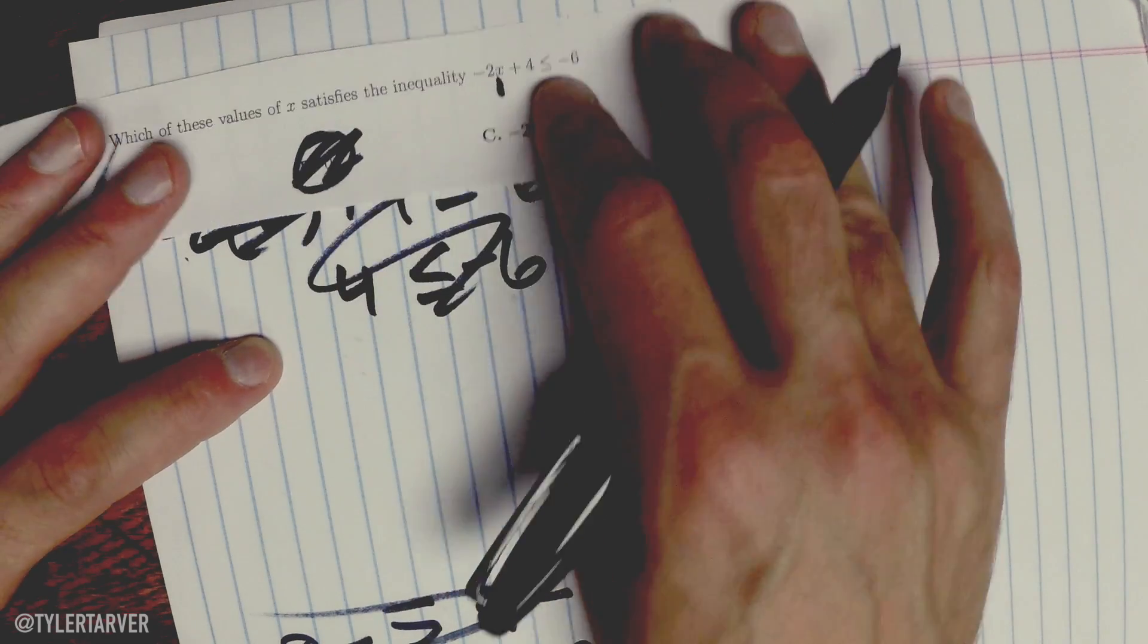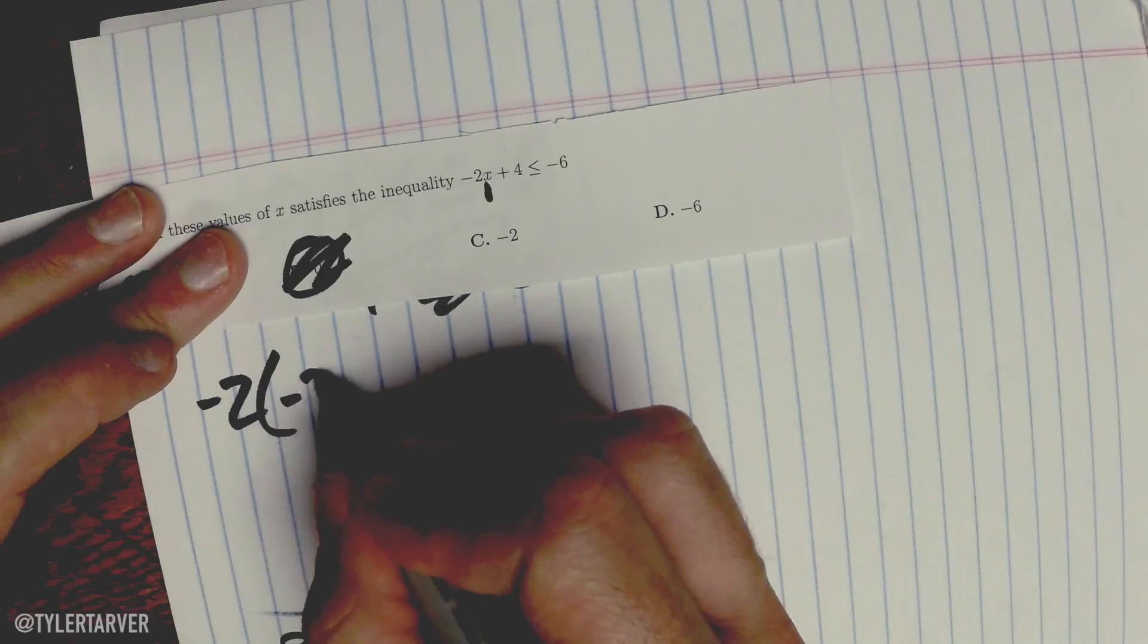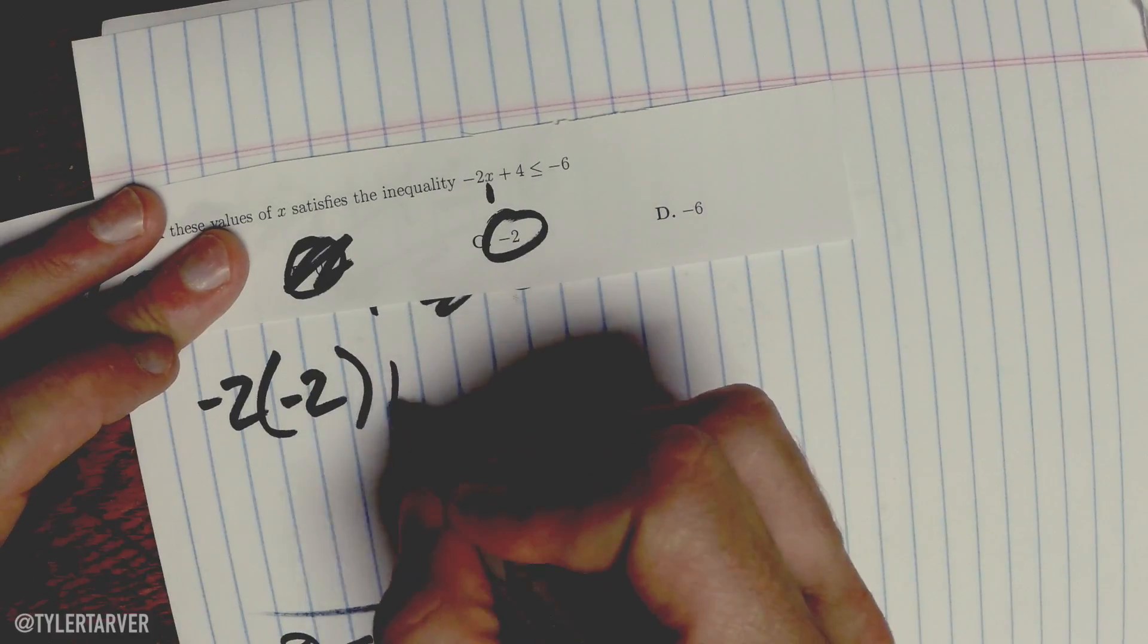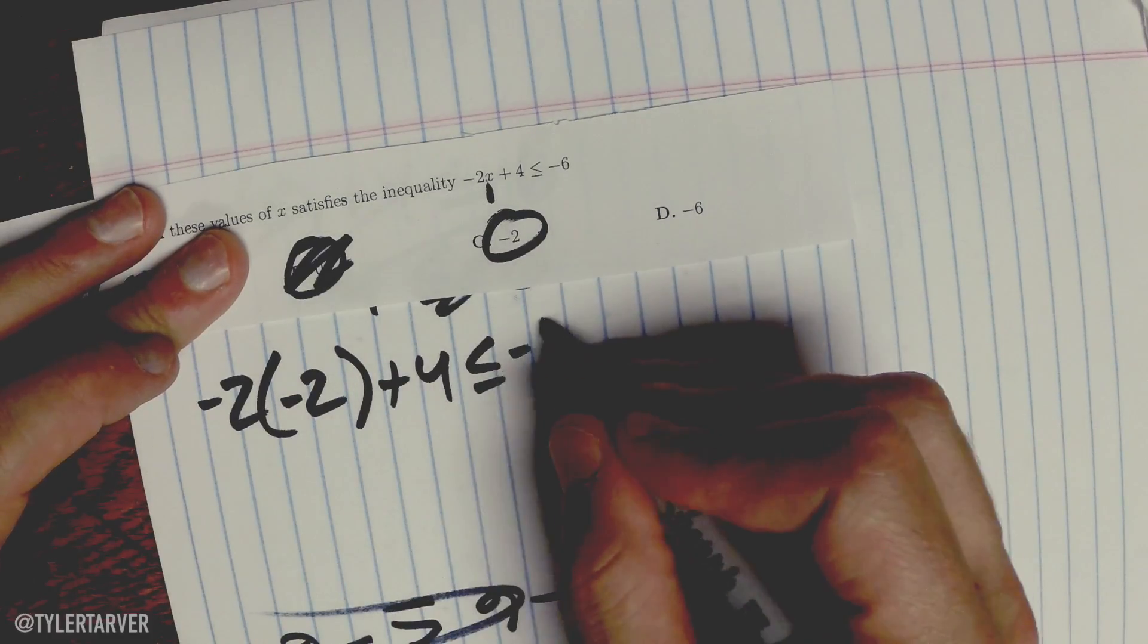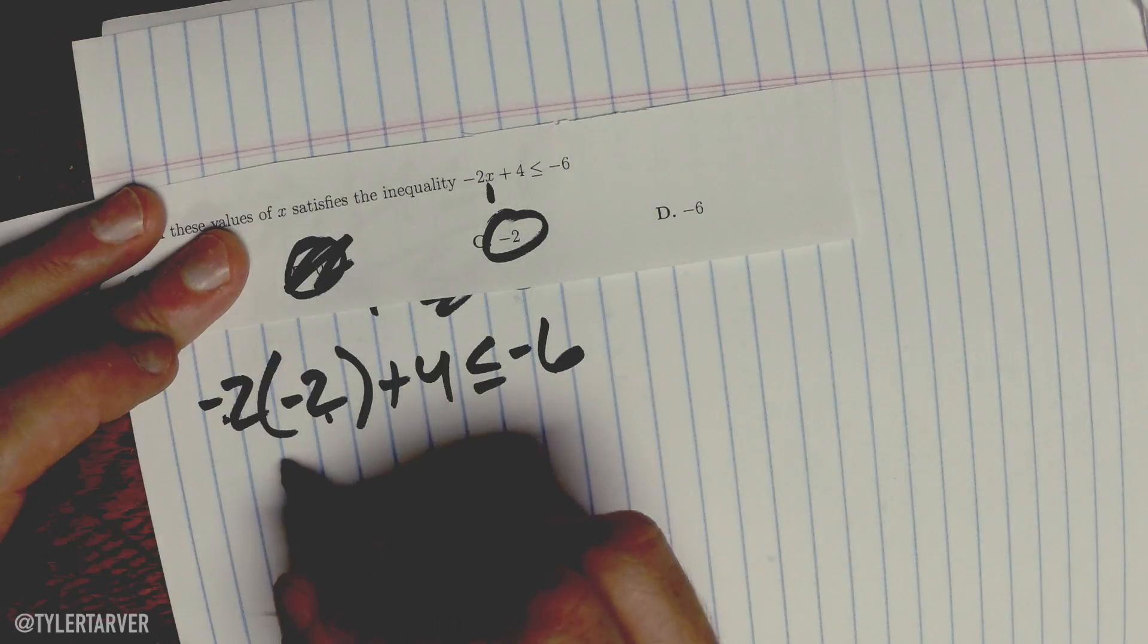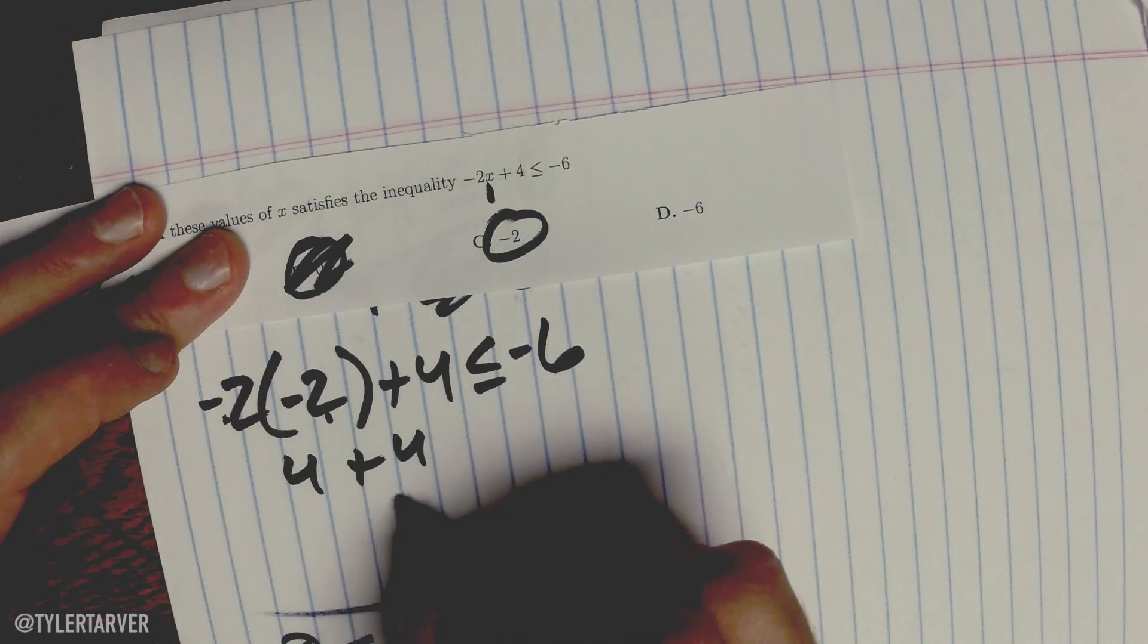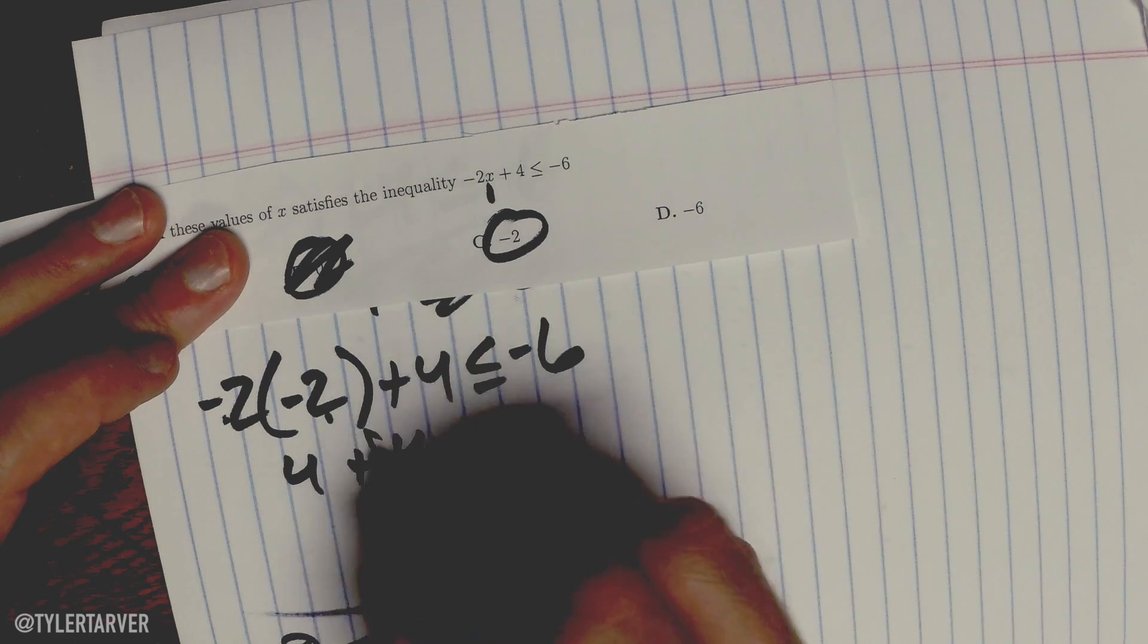Let's try -2. -2 times -2, which is this one, plus 4 is less than or equal to -6. -2 times -2 is positive 4. 4 plus 4 is 8. Is 8 less than -6? No.